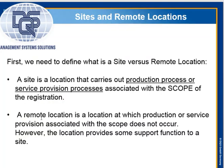We need to define the difference between a site and a remote location. A site is a location that carries out production processes or service provision processes associated with the scope of the registration. A remote location is a location at which production or service provision associated with the scope does not occur, but provides some support function to the site. For example, a headquarters that does design and sales would be a remote location, while the manufacturing sites that actually manufacture the product would be the sites.